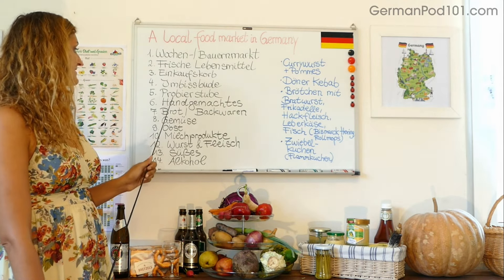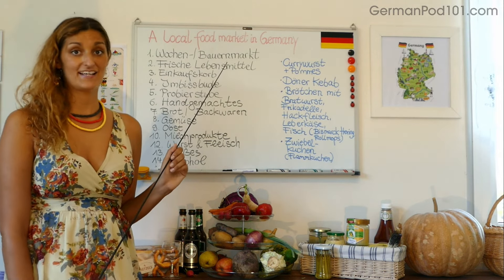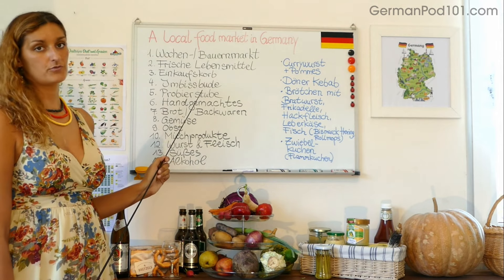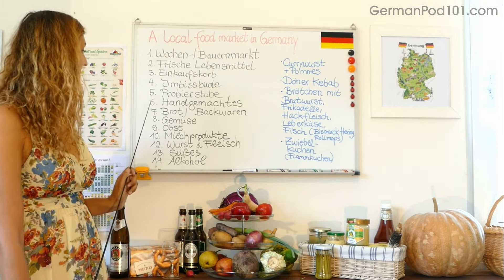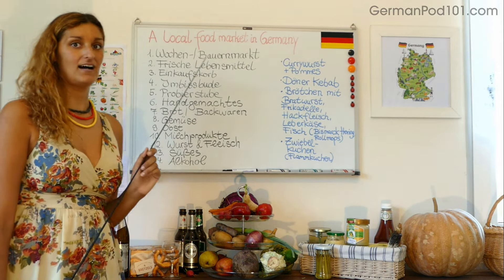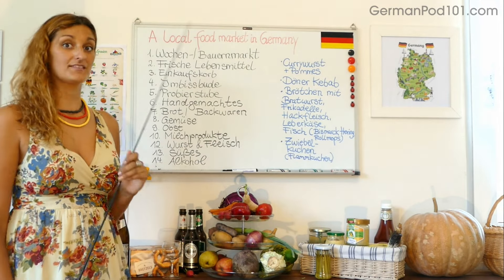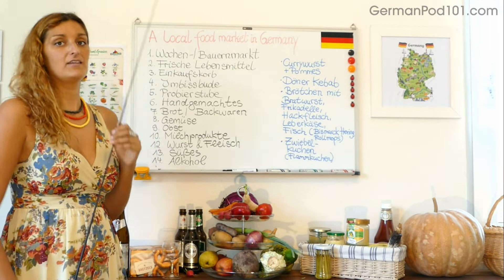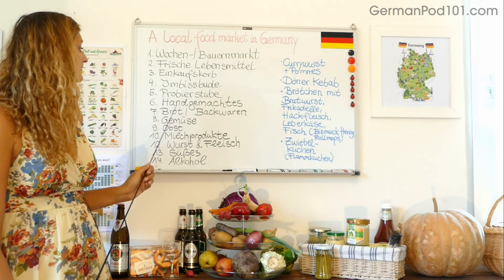Dann Nummer fünf ist die Probierstube. Probieren is the word for tasting, and Stube is a very old-fashioned word for room — so the tasting room, Probierstube. Die Nummer sechs ist Handgemachtes. I just used that word for describing the basket because it's handmade — handgemacht, made with your hands, is arts and crafts in Germany.